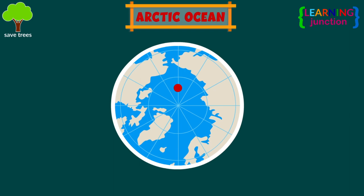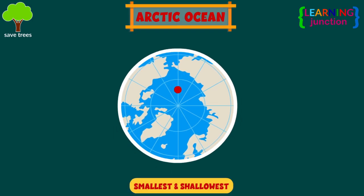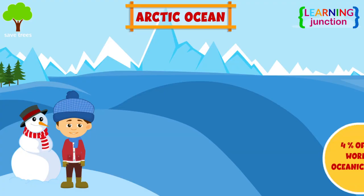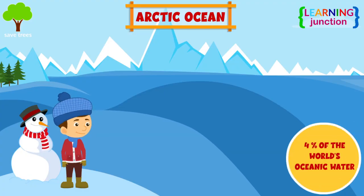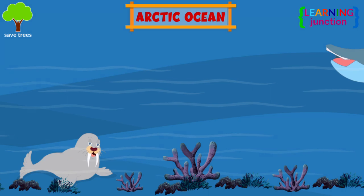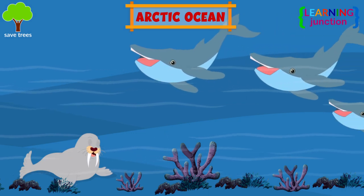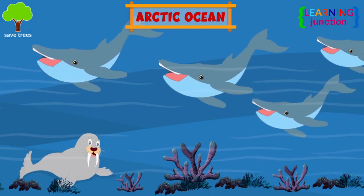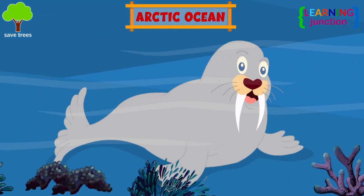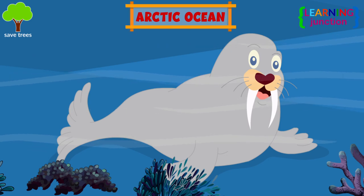The Arctic Ocean is the smallest and shallowest of the oceanic divisions, covering about 4% of the world's oceanic water. It is covered by an ice cap, which makes it a spectacular haven for fish and marine life.